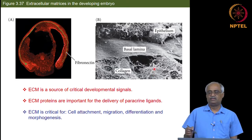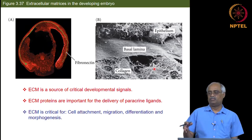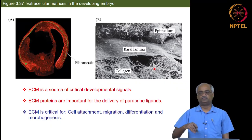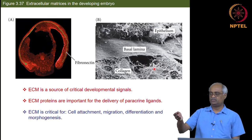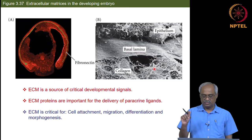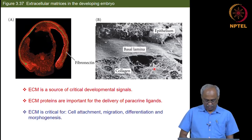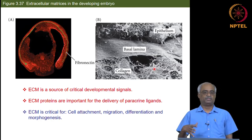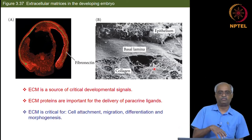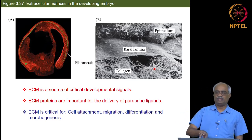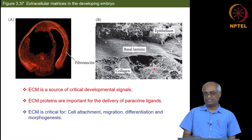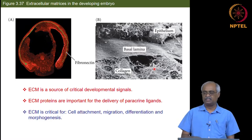ECM is primarily composed of collagen as the major structural protein. Fibronectin helps connect the cytoskeleton all the way to collagen and carbohydrates. In addition, you have proteoglycans — a protein-carbohydrate combination where the carbohydrate portion is large relative to the protein part. If the opposite ratio is true, they are called glycoproteins. Proteoglycans are the main ECM components.